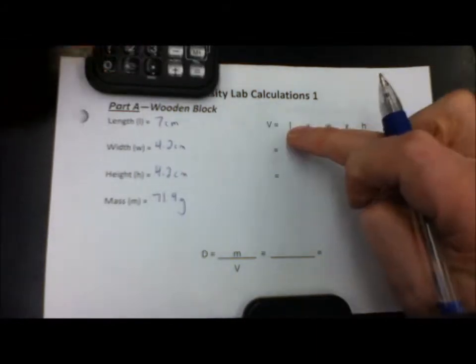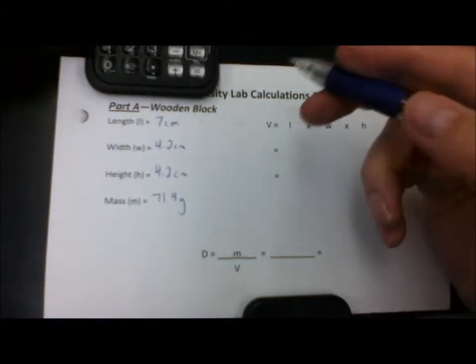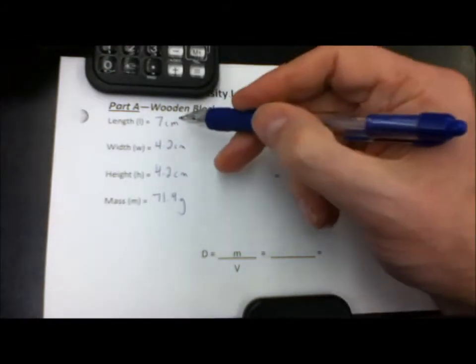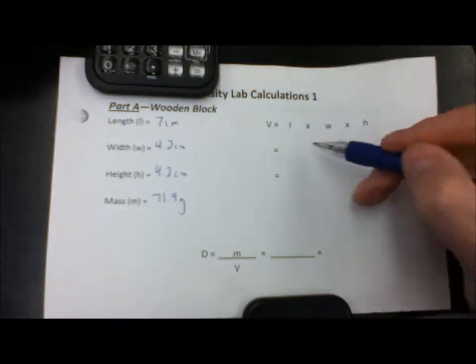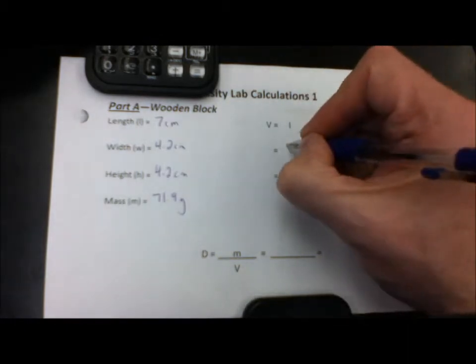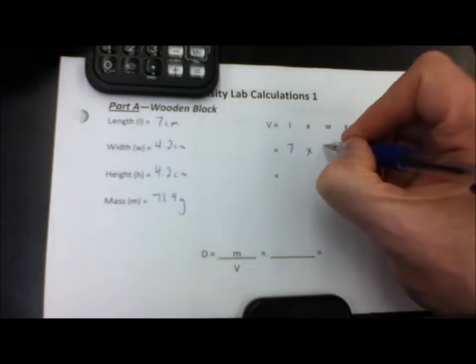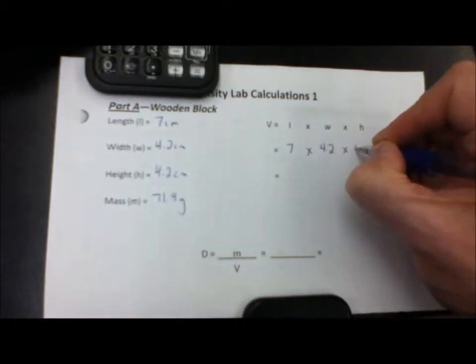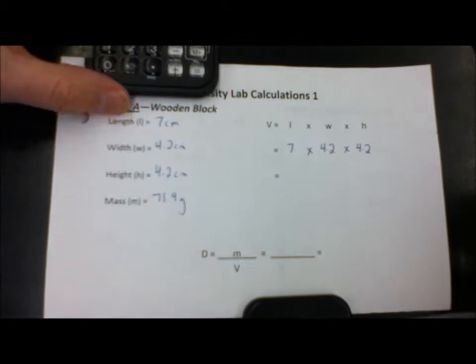Now we want to calculate the volume, multiplying length times width times height. So let's substitute our values here for our variables. So the length is 7, multiply that by 4.2 as the width and 4.2 as the height.